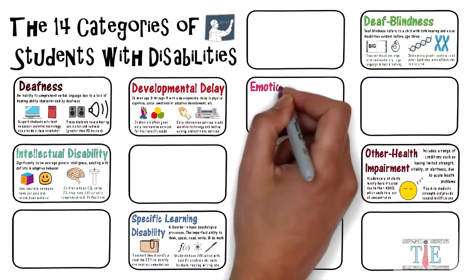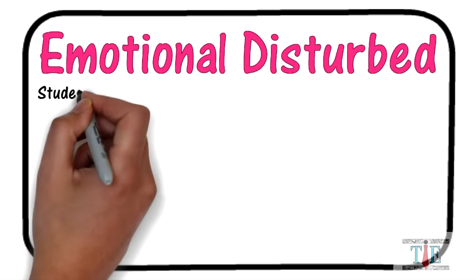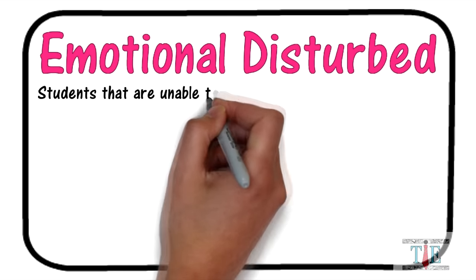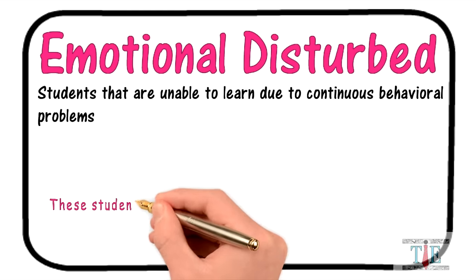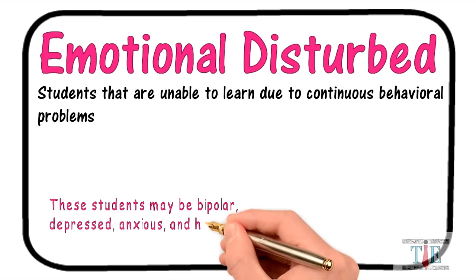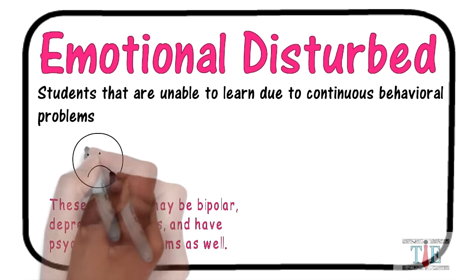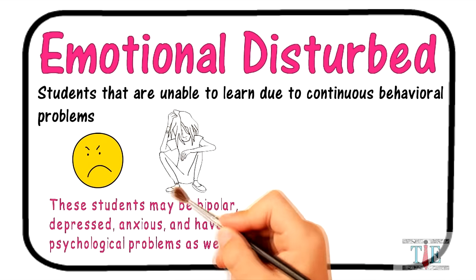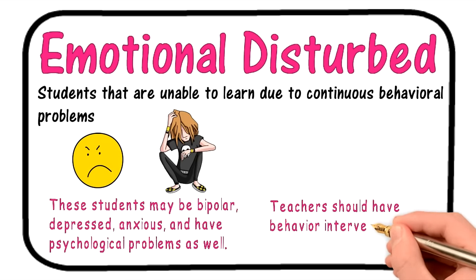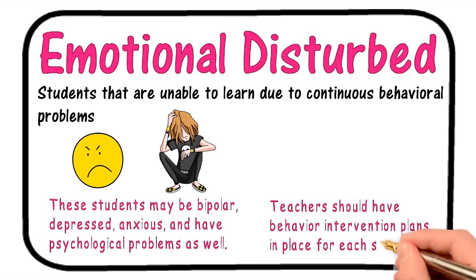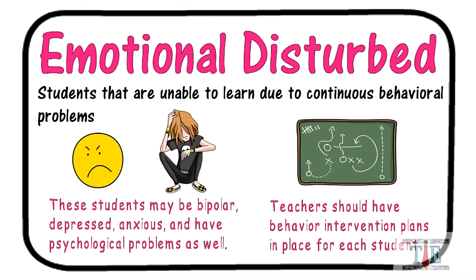Our next category is emotionally disturbed, or emotional disturbance. These students may be bipolar, depressed, anxious, and have psychological problems as well. These children are ill-tempered and angered easily. Some are very withdrawn and antisocial. Teachers should have behavior intervention plans in place for each student. These kids are some of the most difficult to teach. You must be prepared to have a plan of action.